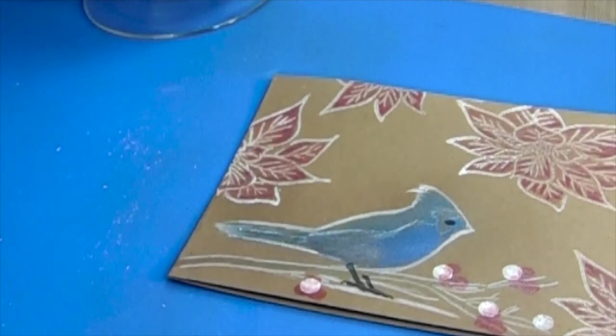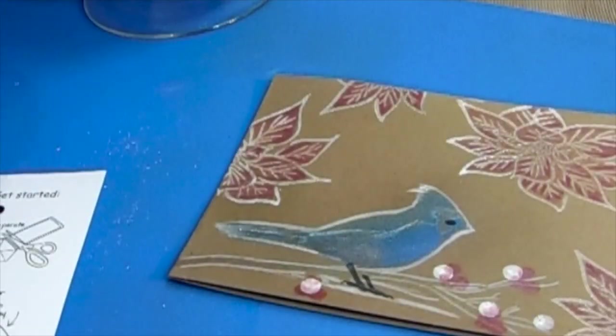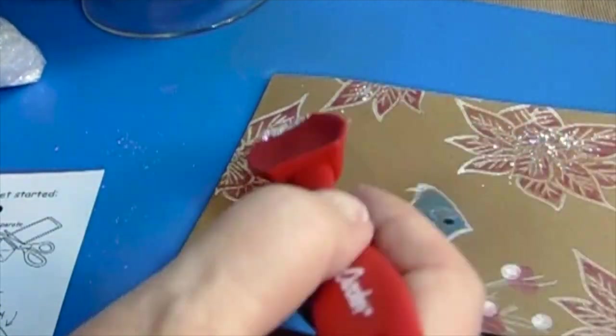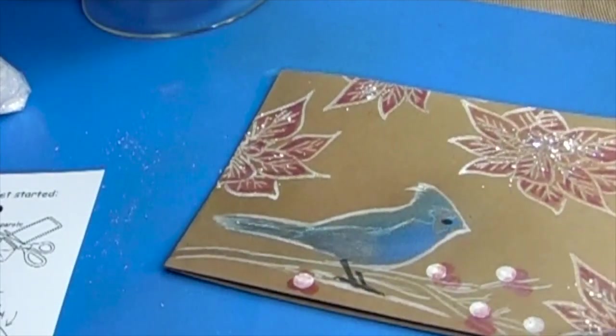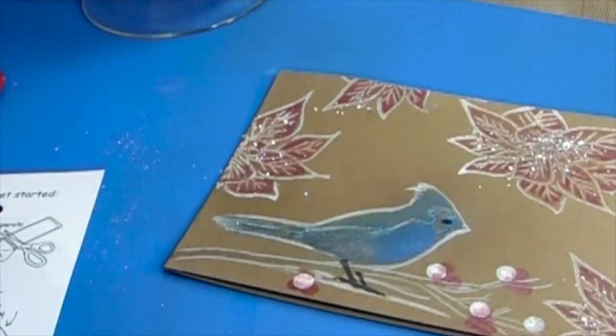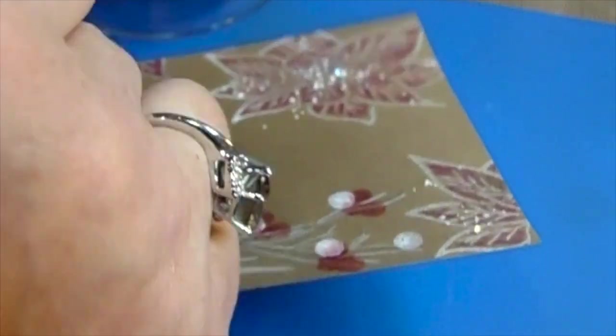What I decided to do here totally makes the card, and that is using that snow Stampendous glitter. I love this, it's got chunky granules. You just put your heat tool underneath, and that's what sets it. The heat from underneath your cardstock melts that powder and the granules beautifully.